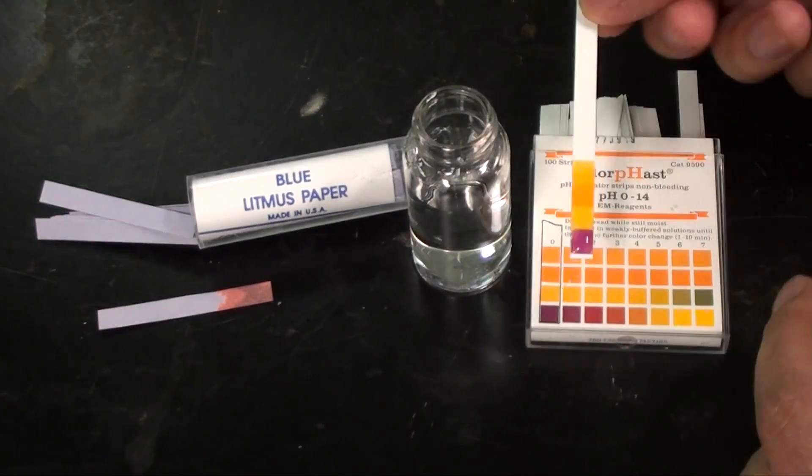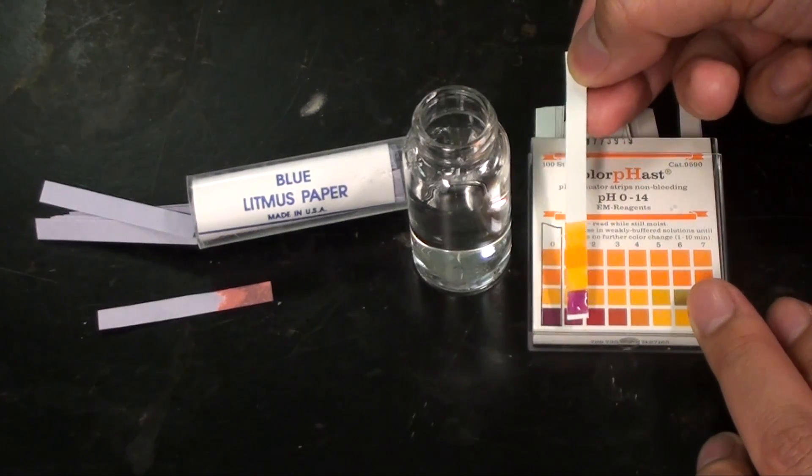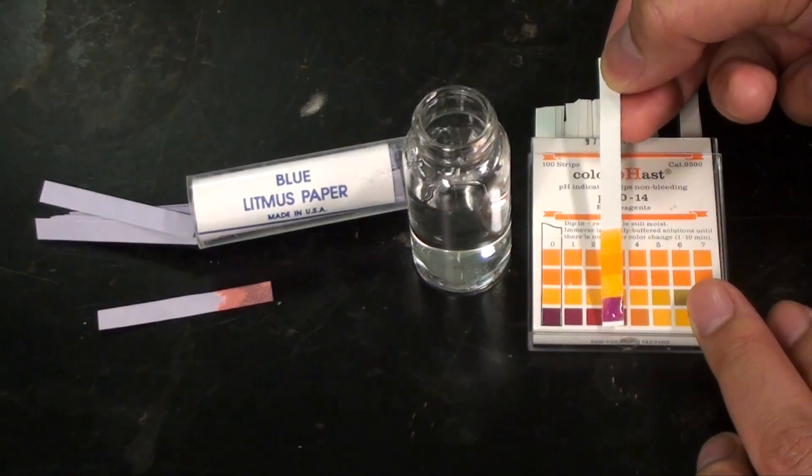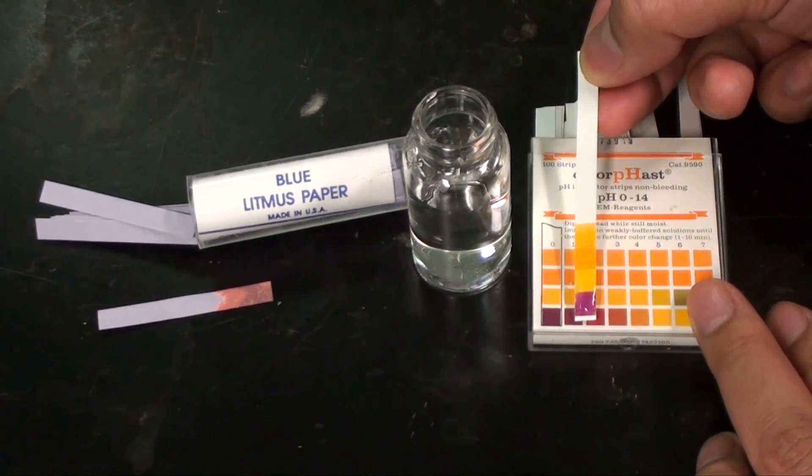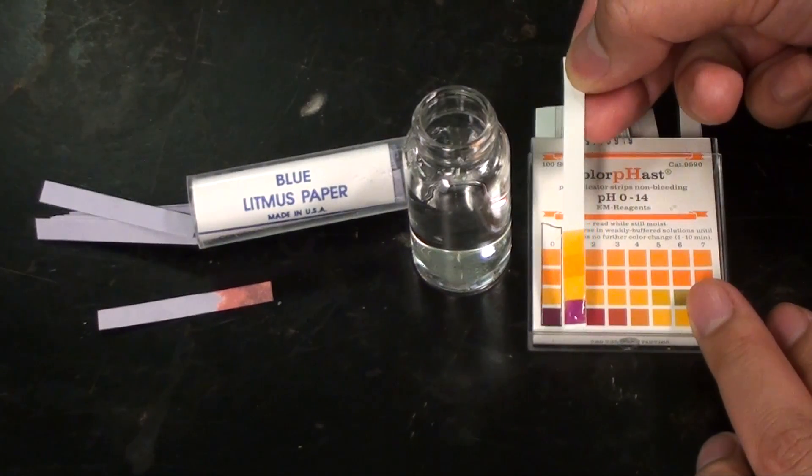Anyway, wait for the color change. And then compare the color to a reference chart to find the pH. For things like fieldwork and quick measurements, this is great.